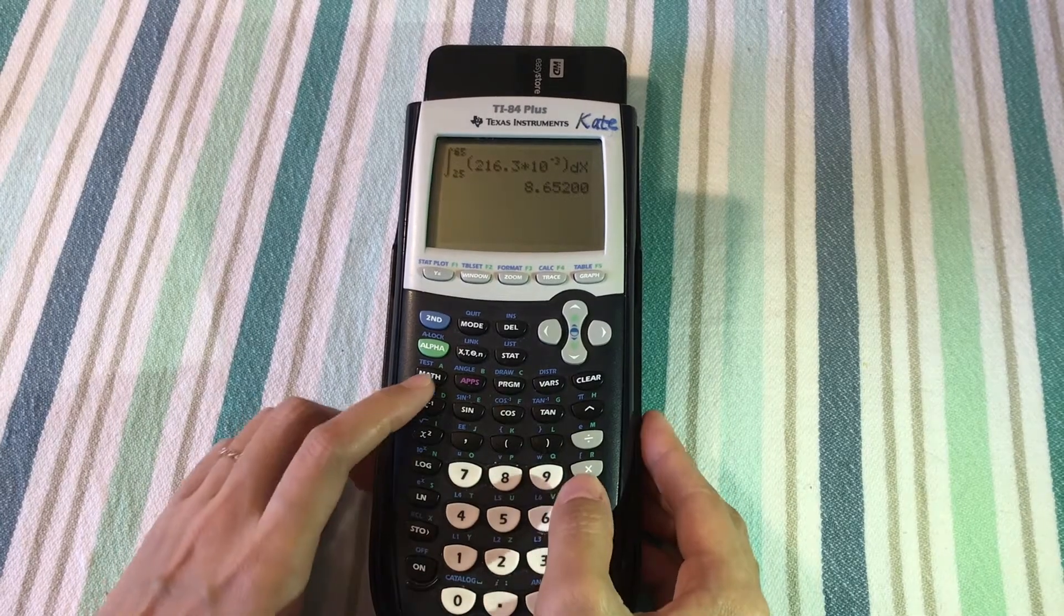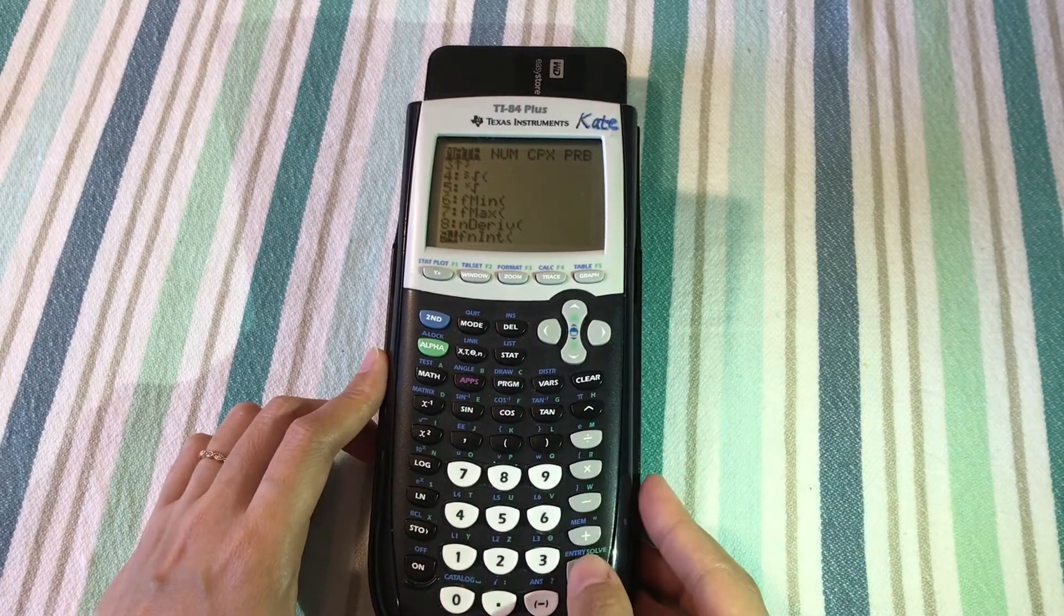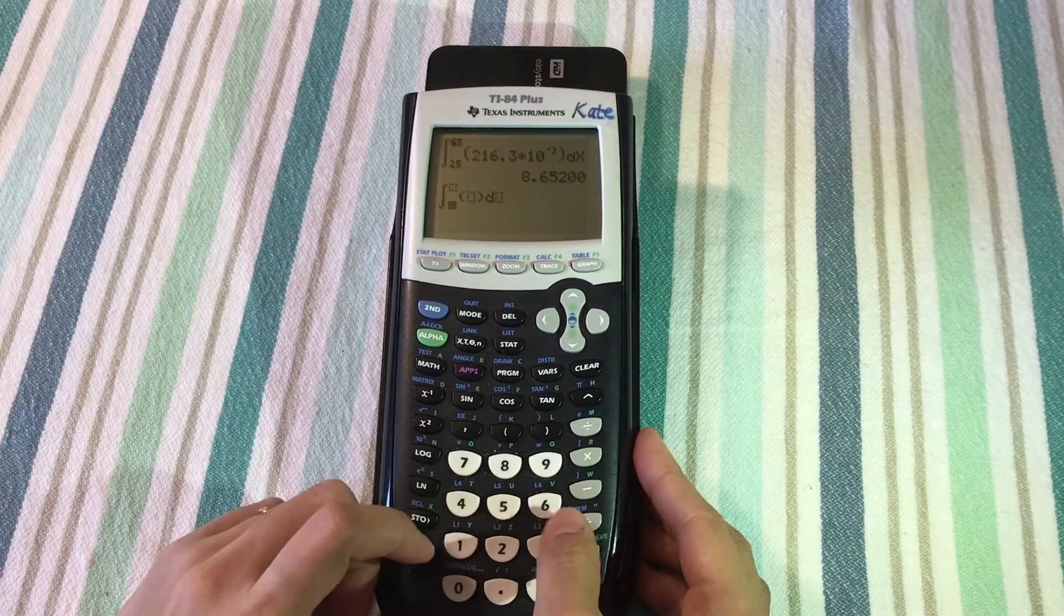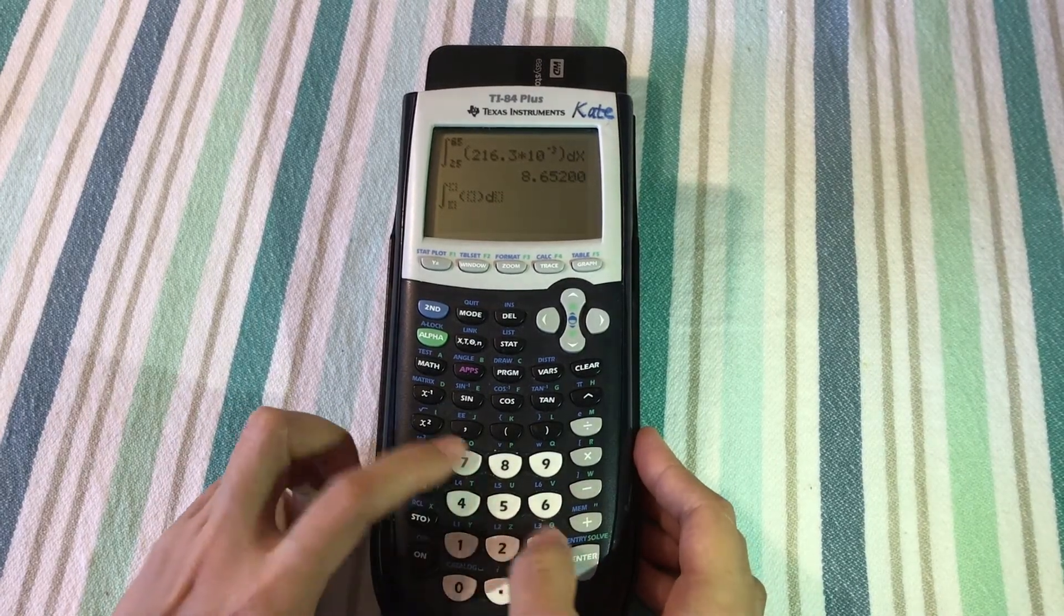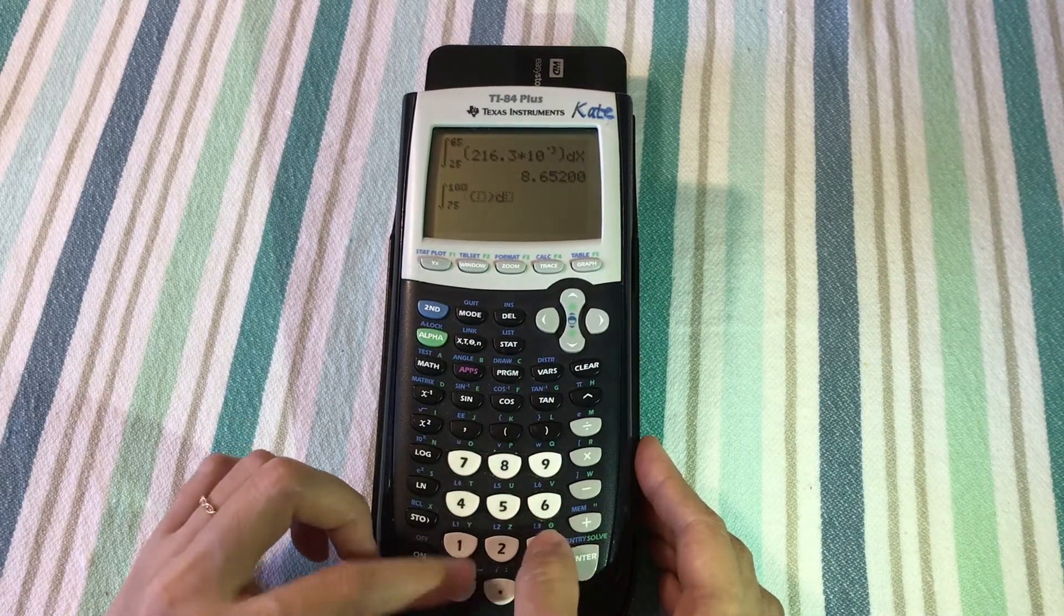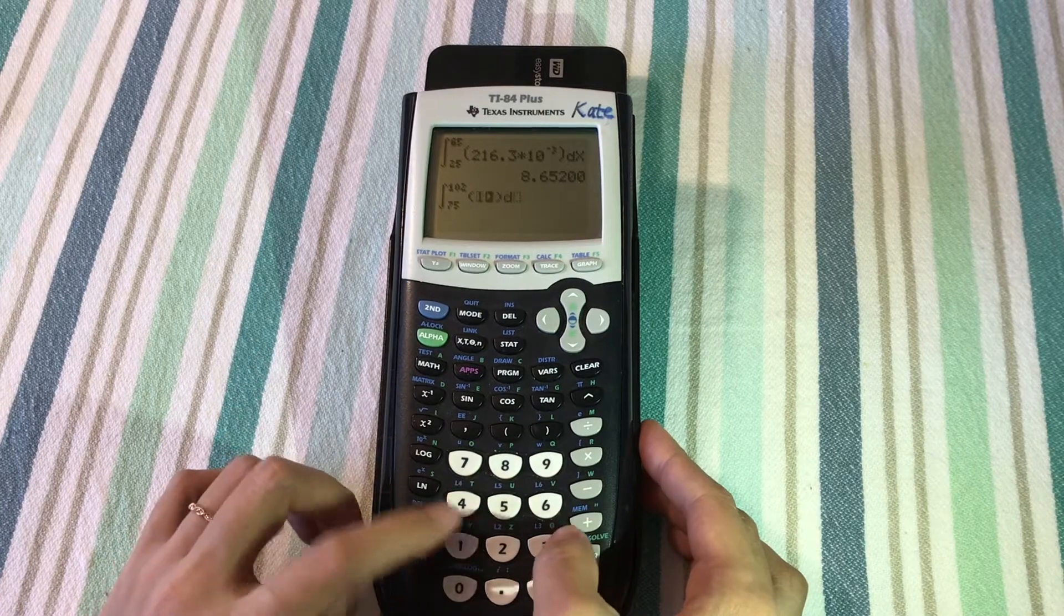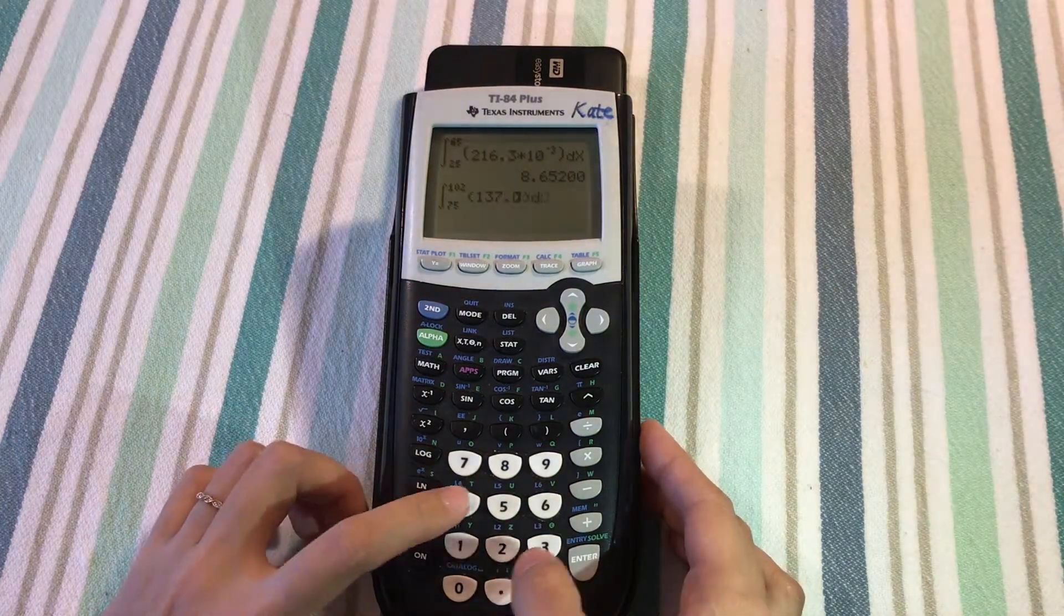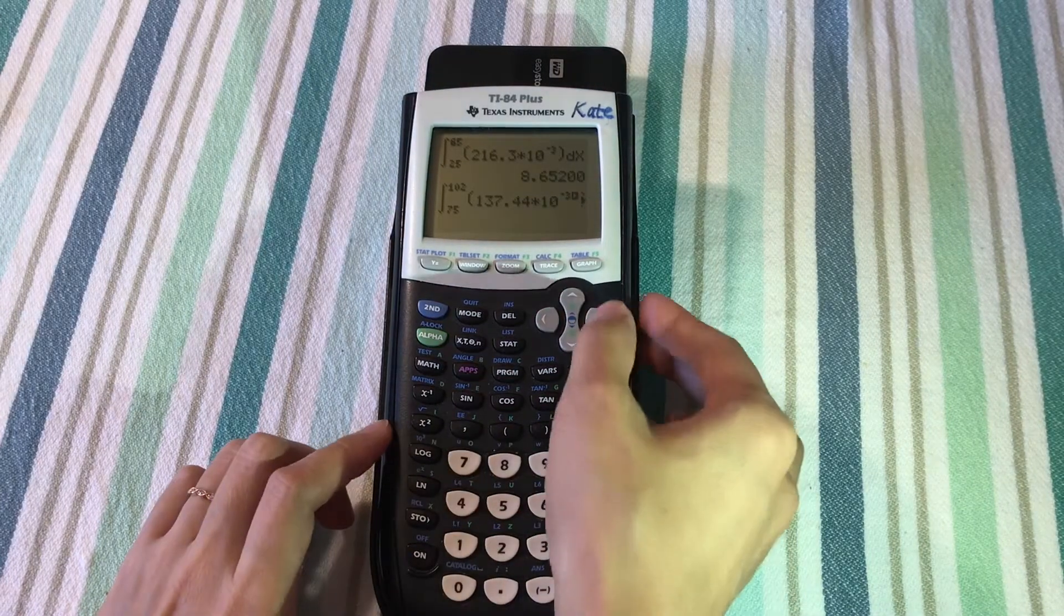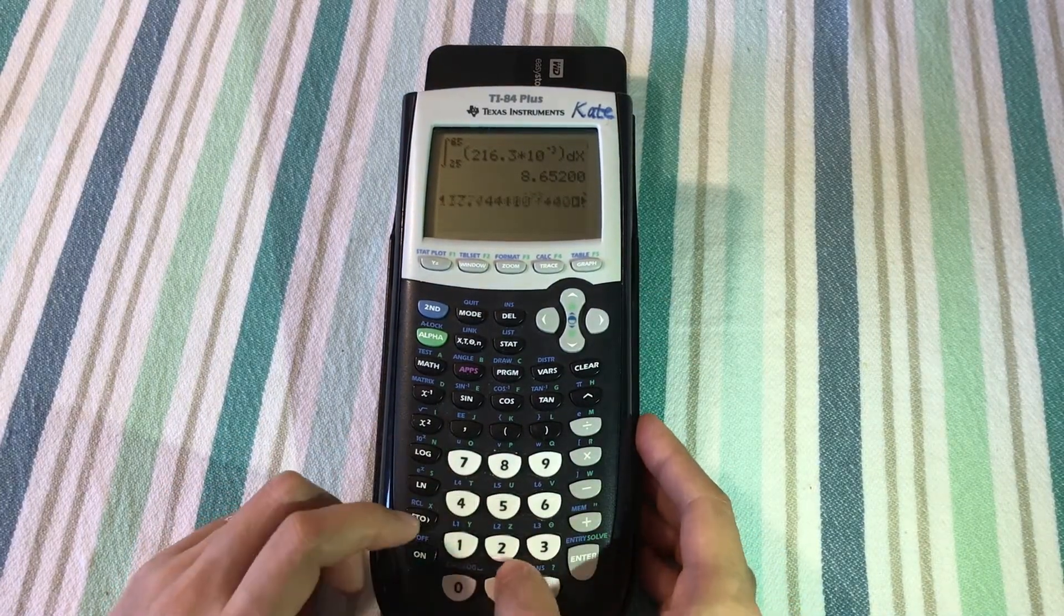From the TI-84, go to math again, scroll down to 9, finite integral. The lower limit this time is 75, upper limit is 102°C. My a for gaseous n-hexane is 137.44 × 10^-3, plus bT, and b is 40.85 × 10^-5.